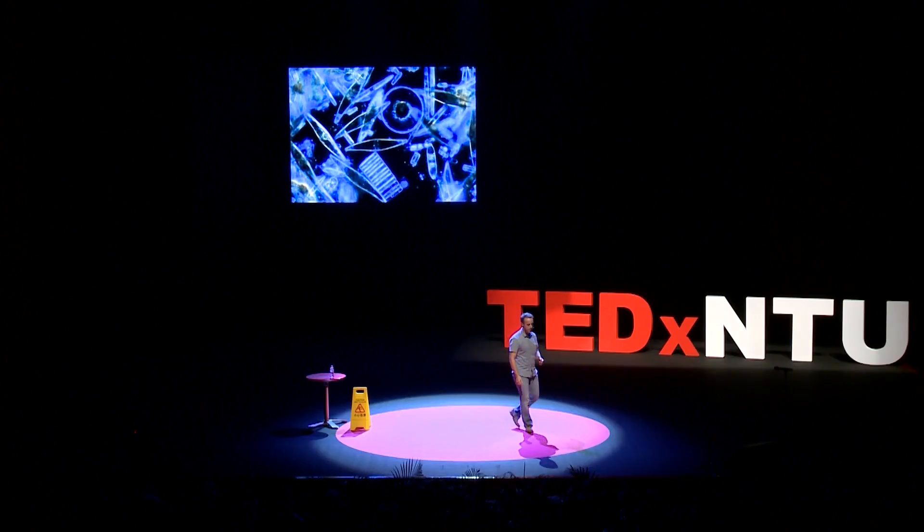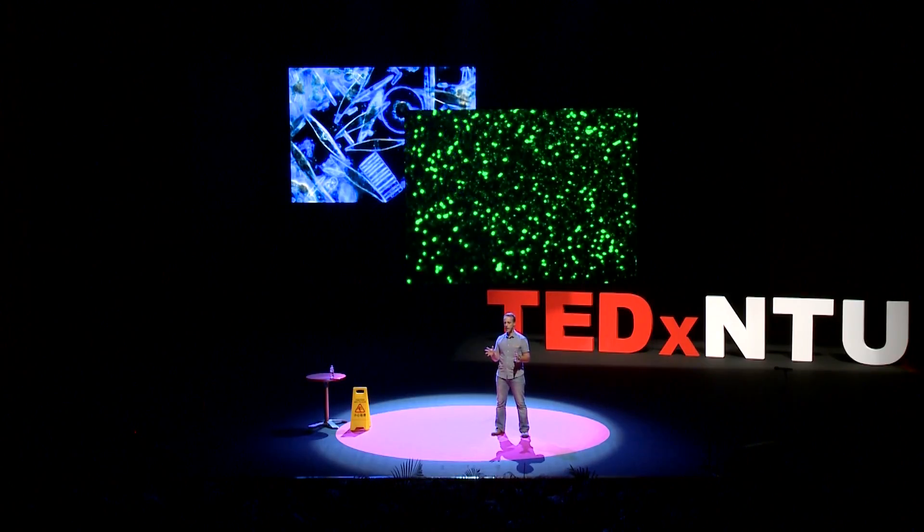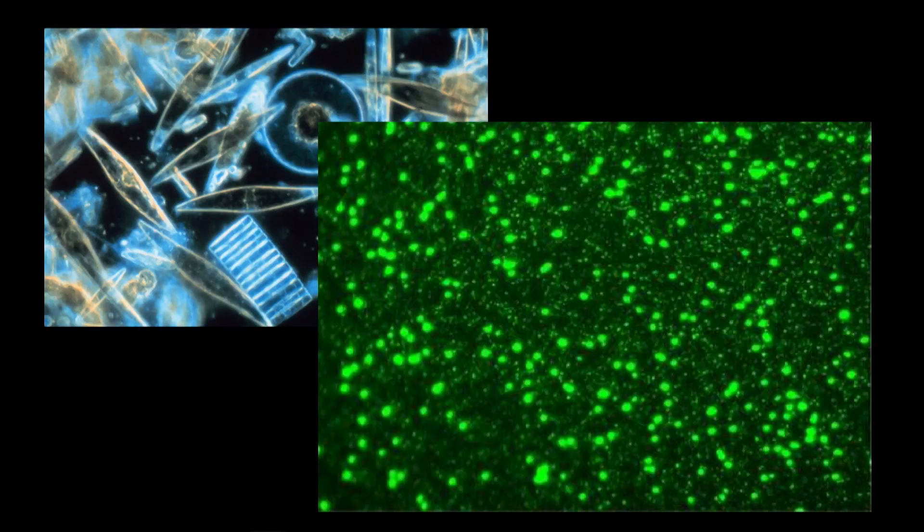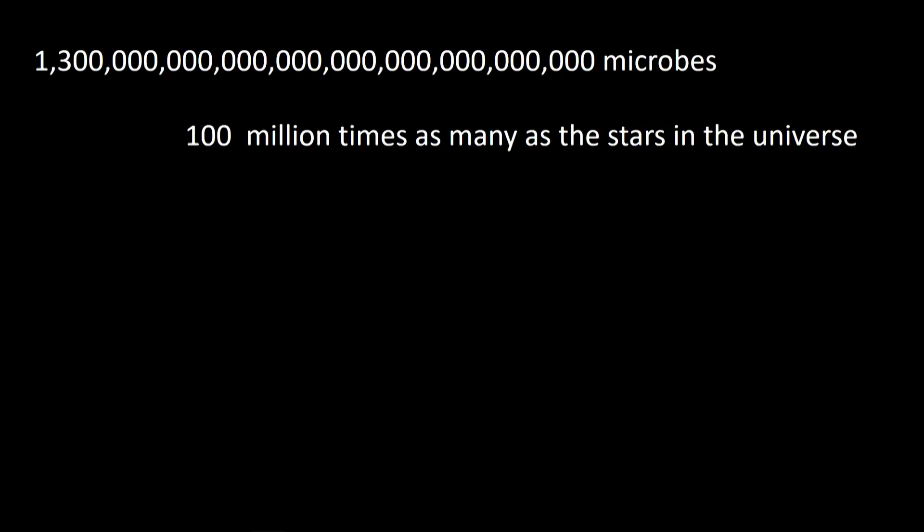These are diatoms you are seeing here. And if we were to zoom in even farther into the incredible world of microbes, we would not see a great variety of forms, but we would see an incredible variety of functions. There are millions of these per every milliliter of water, and if we were to take the global oceans, we would have 1,300 billion billions of billion microbes — that's 100 million times more microbes than there are stars in the known universe.